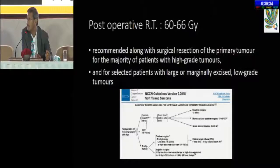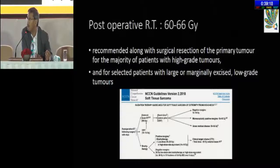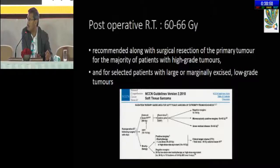Another important study from the Canadian group, Brian O'Sullivan's group, tried pre-operative radiation with skin-sparing, which reduced complications. Skin-sparing intensity-modulated radiation therapy and reduced-volume external beam radiation therapy post-operatively would reduce complications significantly. Doses are also coming down — to 50 gray. The new data shows you could reduce the dose to 50 gray for microscopic disease.